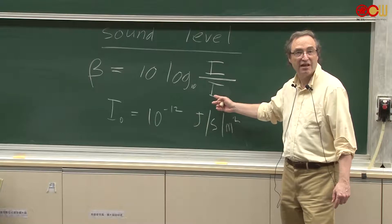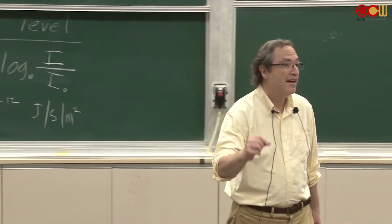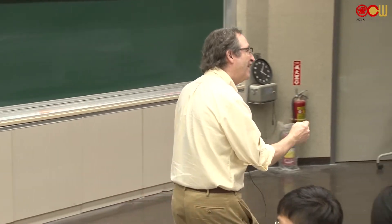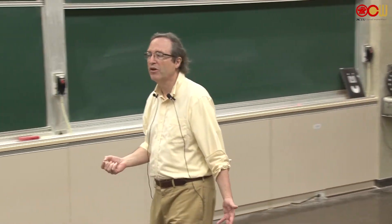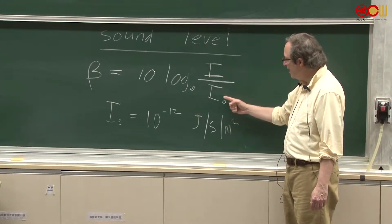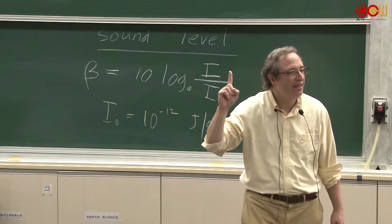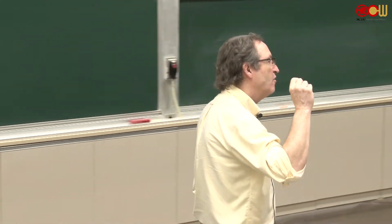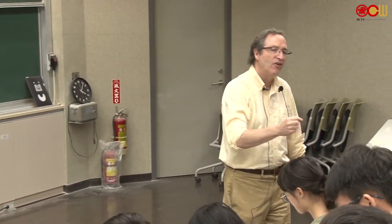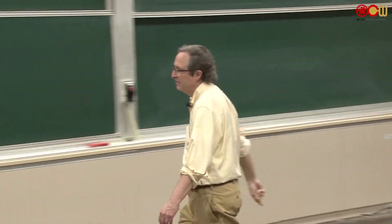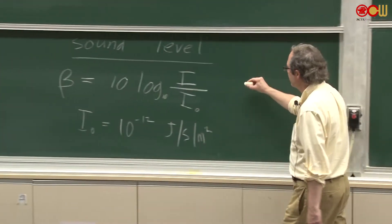Where does this reference energy intensity come from? It comes from the fact that you, probably not me, can hear sounds at an intensity of around 10 to the minus 12 watts per meter square. It's pretty low. So when we have that intensity, we let i equal that, we get one. What's the log of one? Zero. So the lowest sound level you can hear is zero in this case. And this is called decibels.